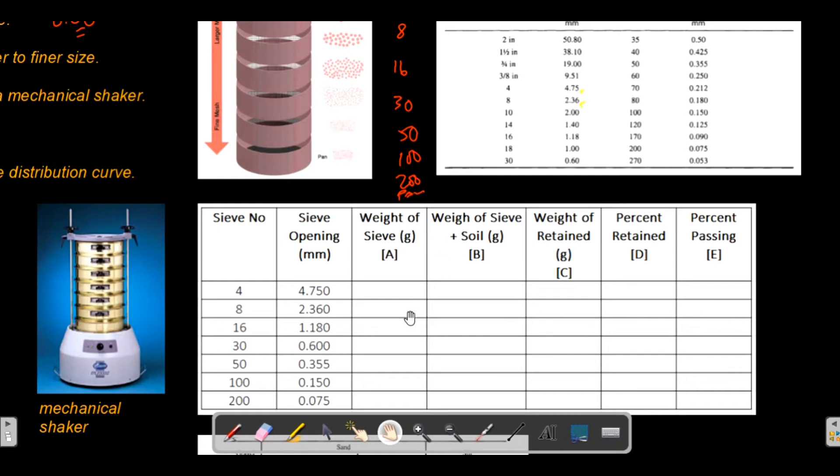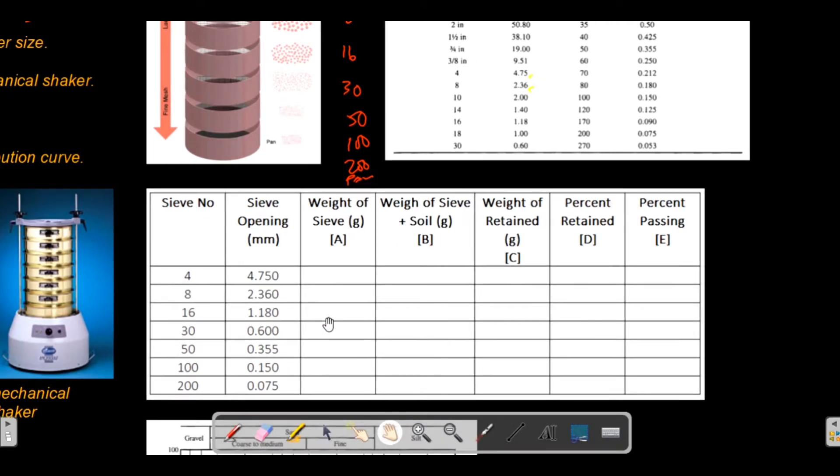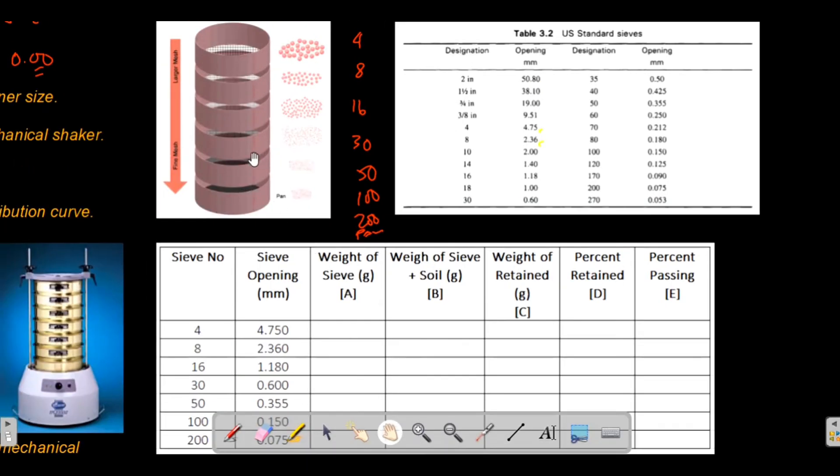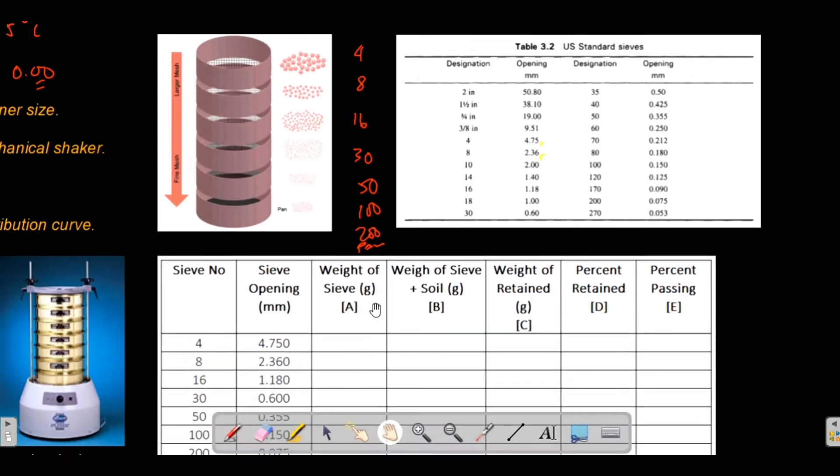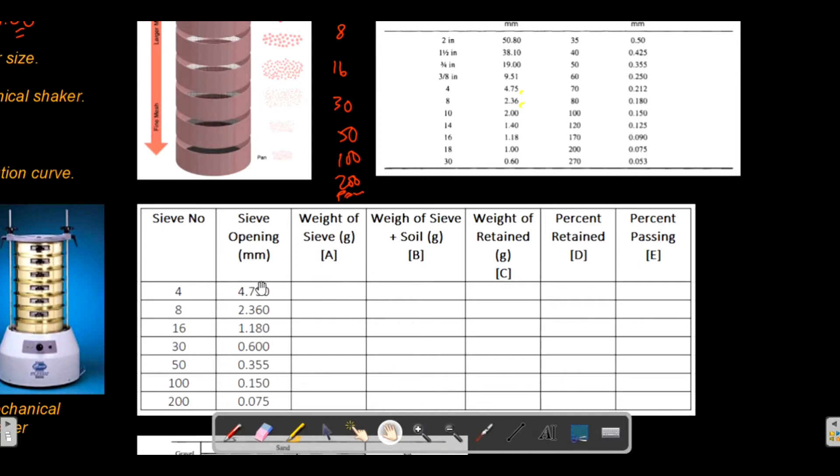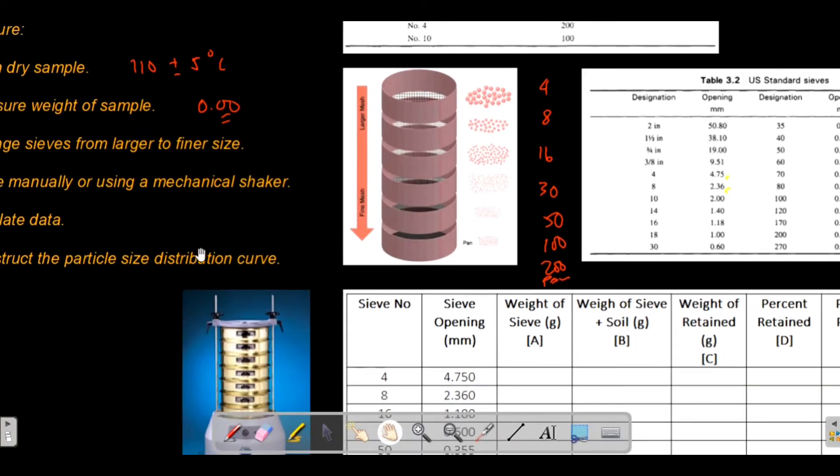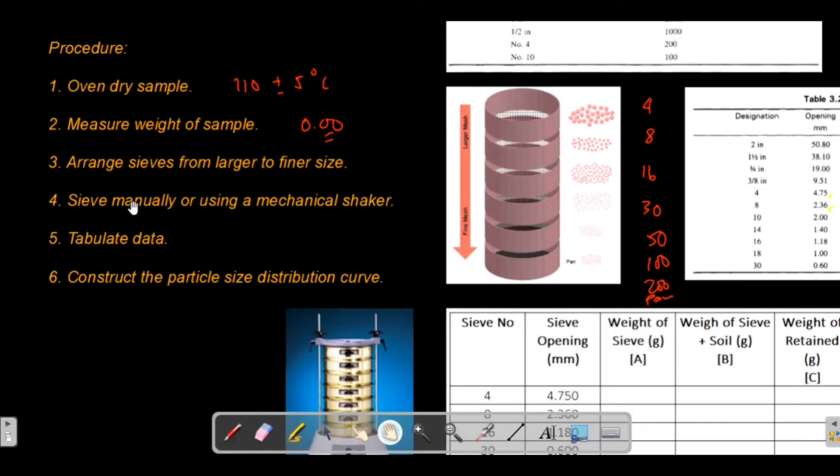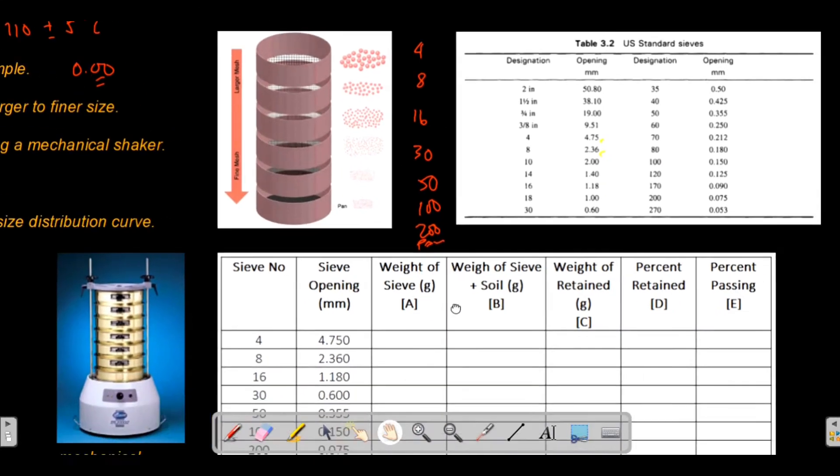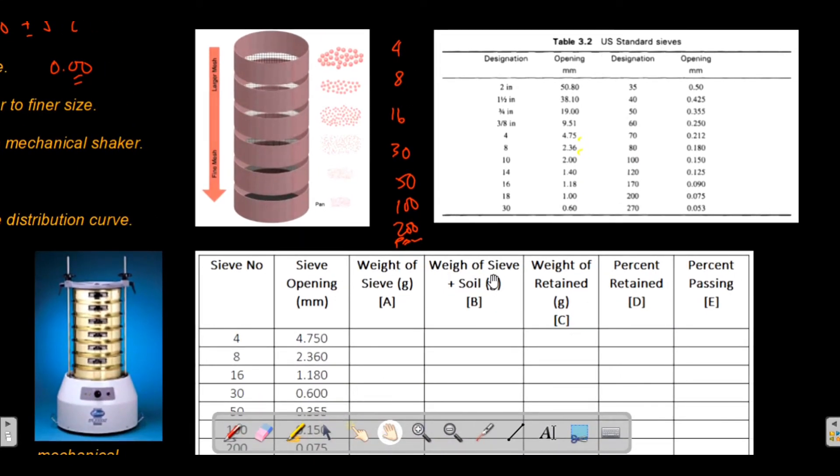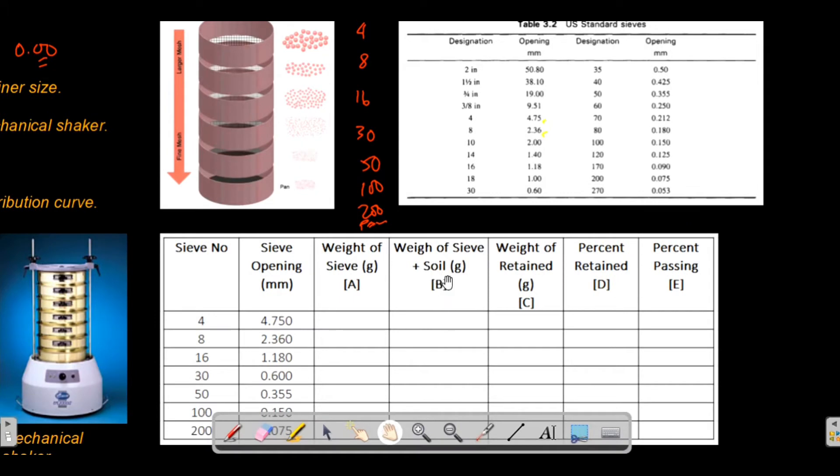For data tabulation, this is a sample of the tabulation. You can put the sieve number, sieve opening. This one is the weight of sieve. Like I mentioned earlier, you have to measure the weight of the individual sieves in grams and record the weight. After shaking, you will measure the weight of the soil plus the weight of the sieve. These are just symbols I've placed to represent these parameters.